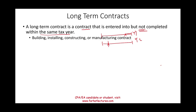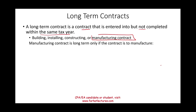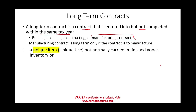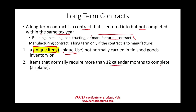Long-term contracts involve building contracts, installing contracts, or manufacturing contracts. For manufacturing contracts, they qualify as long-term only if the contract is to manufacture a unique item — one with a unique use that is not normally carried in finished goods inventory. If you're simply producing regular inventory, that does not qualify as a long-term contract.